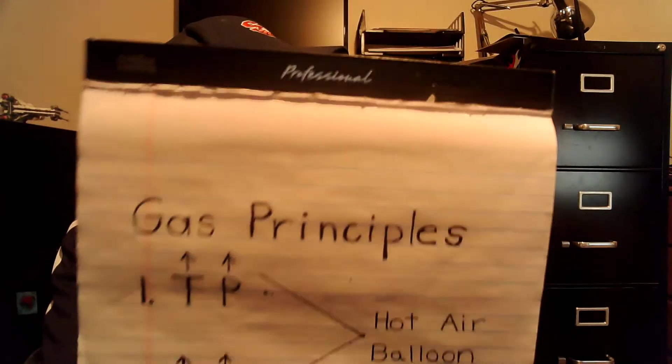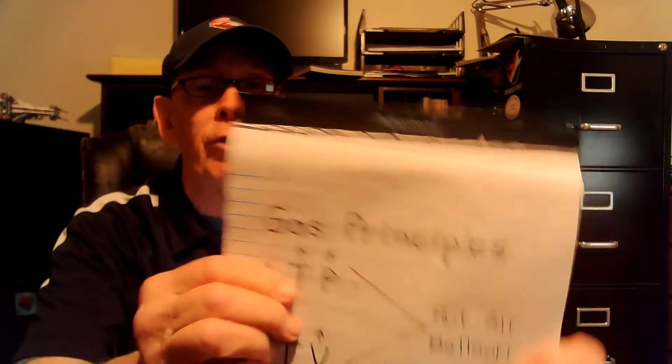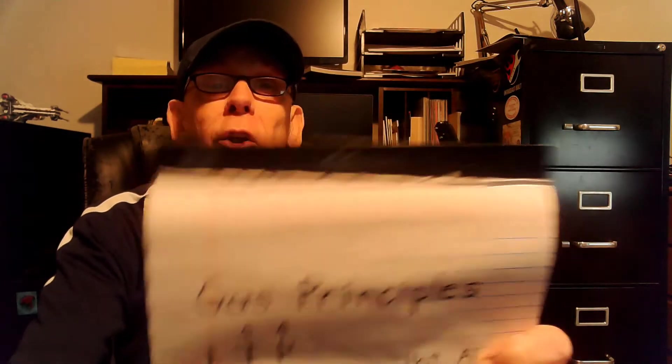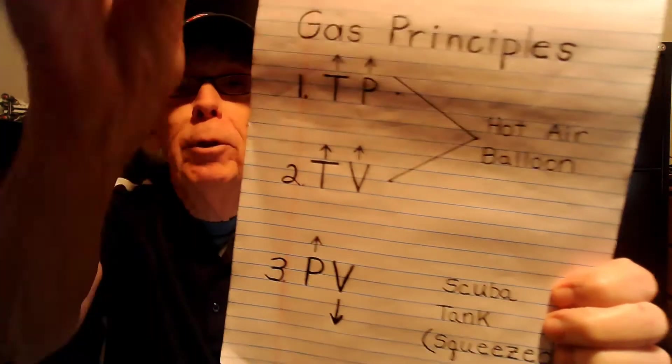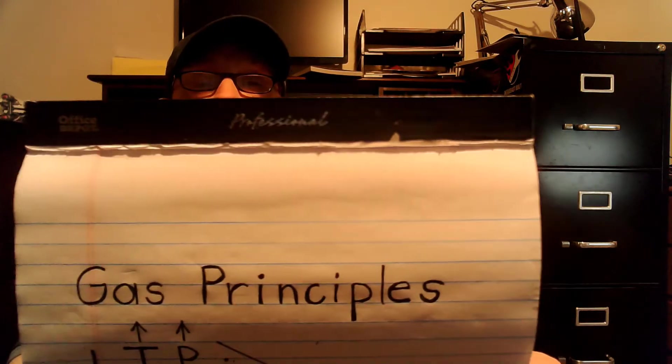Now let's go over the gas principles — you can bet I'm going to ask you these. Here's the first one: if the temperature goes up on a gas — say we heat up air, which is nitrogen and oxygen — what happens? It's going to have more pressure, more force, more push. T goes up, P goes up. Temperature goes up, pressure goes up. The second principle: temperature goes up, volume goes up — it takes up more space. T goes up, V goes up.